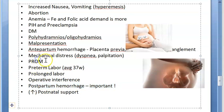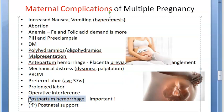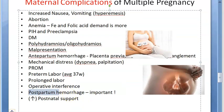Now, postpartum hemorrhage — this is a real problem after delivery. It can occur because of atony of the uterine muscle: the uterus was over-distended during pregnancy and is not contracting well after delivery. Additionally, the bigger placenta takes longer to separate, there is a bigger surface area of the placenta, and the placenta could have implanted in the lower segment which is less retractile.